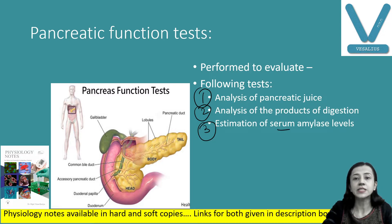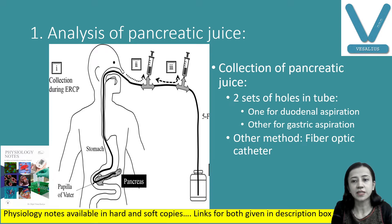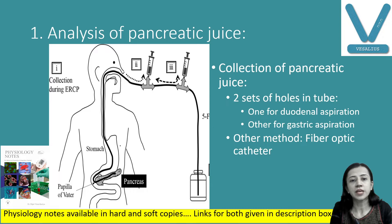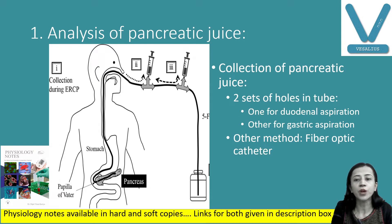Starting with the first — analysis of pancreatic juice. To collect pancreatic juice, you have to insert a double lumen catheter, which has a radio-opaque tube. This allows us to track it with the help of X-rays. The radio-opaque tube is passed either through the nose or mouth until the tip of the tube reaches the duodenum near the ampulla of Vater.